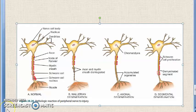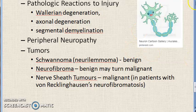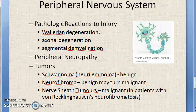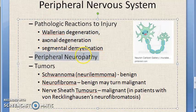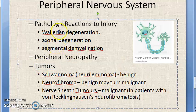In the nervous system, so far we have looked at central nervous system pathology. Now let us move on to the pathologies of the peripheral nervous system. There are three main headings: pathologic reaction to injury, degeneration and demyelination, then peripheral neuropathy, and then we will look at tumors of the peripheral nervous system.